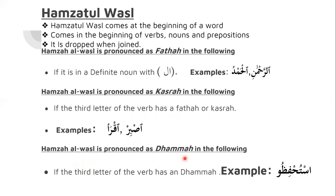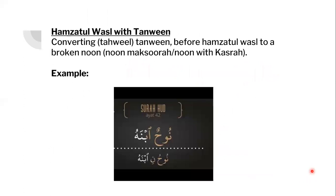Then you have a second case where Hamzatul Wasal is pronounced with a Dhamma. If the third letter of a verb has a Dhamma — for example, on the Dal we have a Dhamma — you will place a Dhamma on Hamzatul Wasal. And if the word's third letter has a Dhamma on it, you will be placing a Dhamma on Hamzatul Wasal.